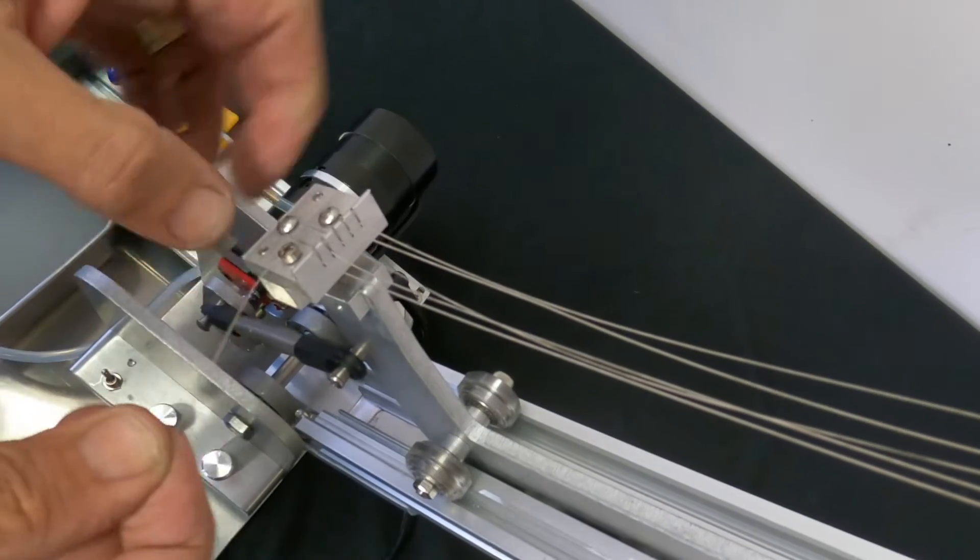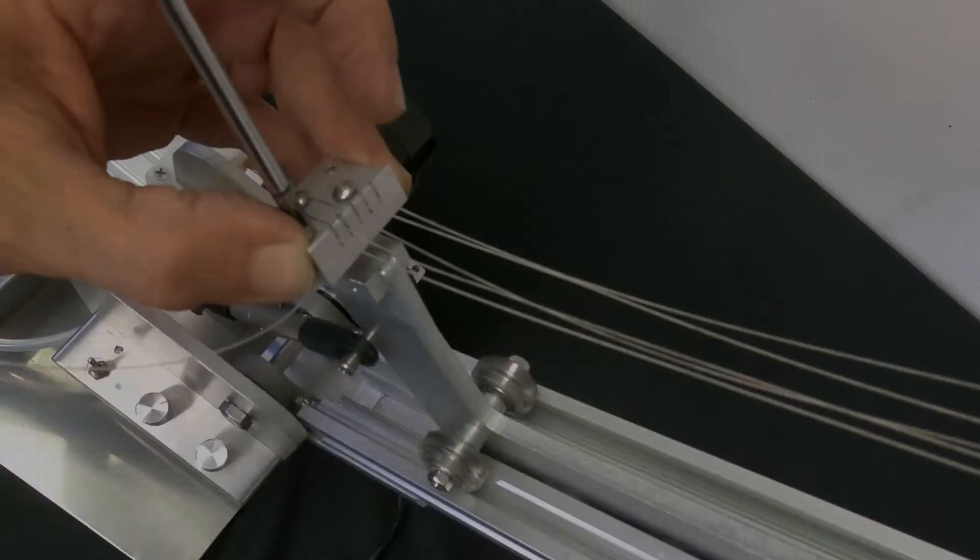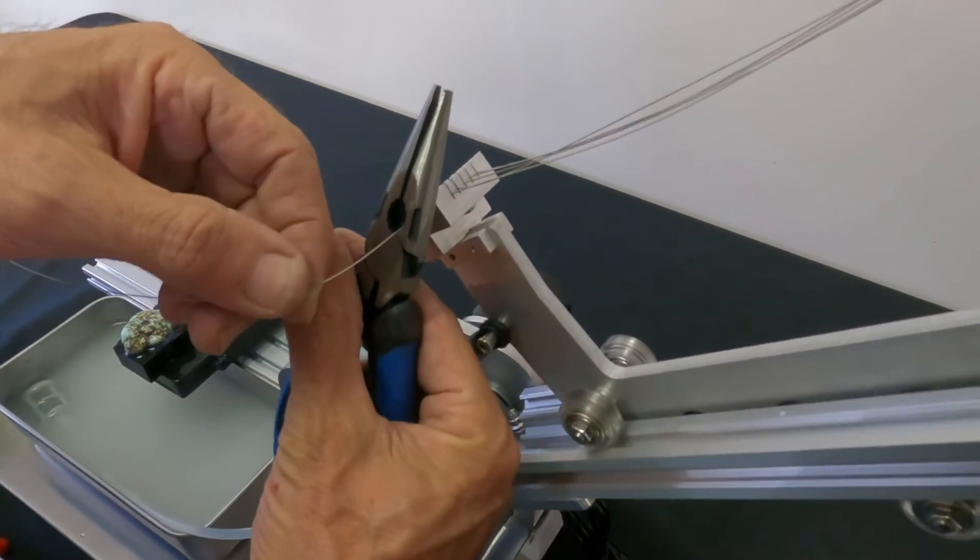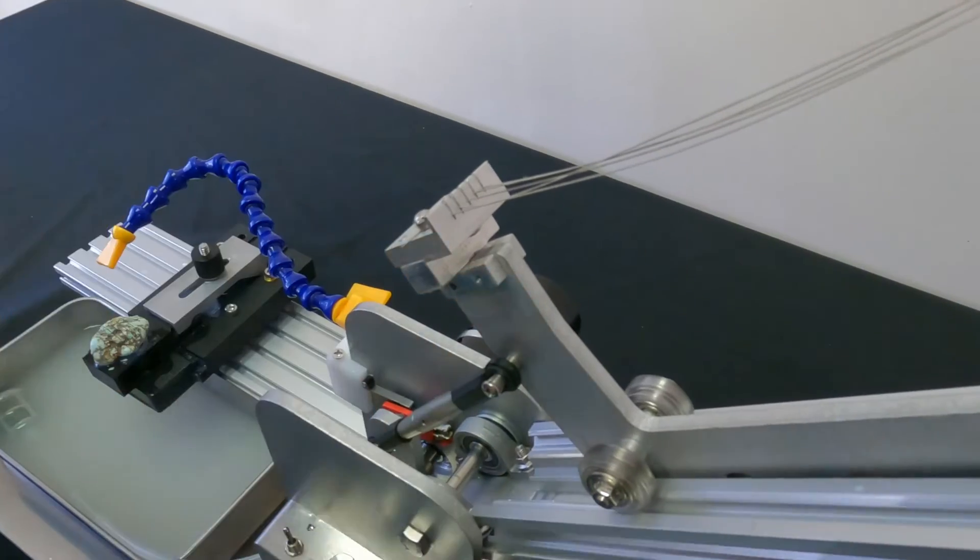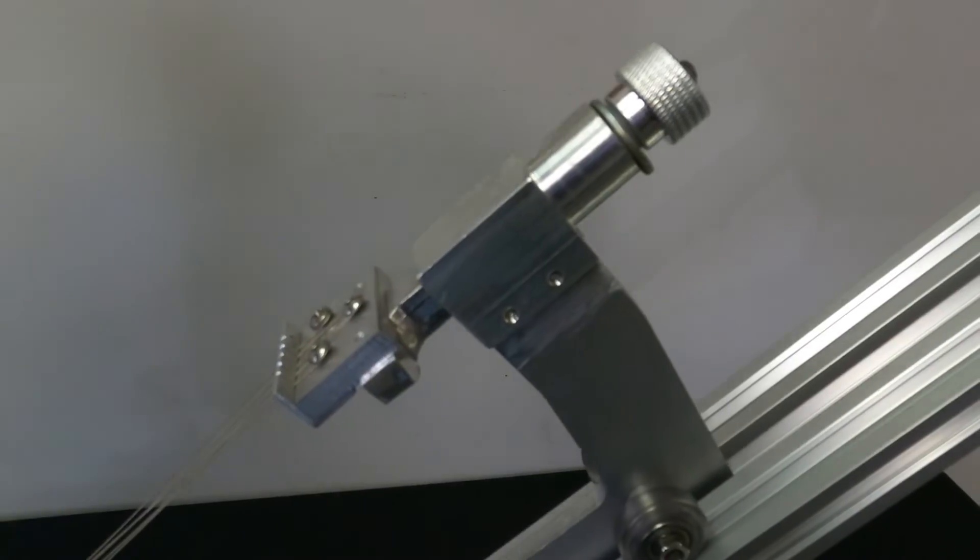Wrap it underneath and pull it tight. Tighten the screw. Next step is to clip the end of the wire. Leave it a little long so that you can see the tail.